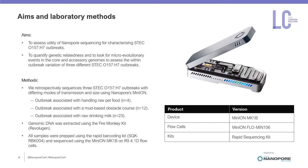The aim of this particular study was to see if we can use Oxford Nanopore sequencing to characterize STEC O157:H7 outbreaks, and related to this we wanted to look for microevolutionary events in the core and accessory genomes within those outbreaks.